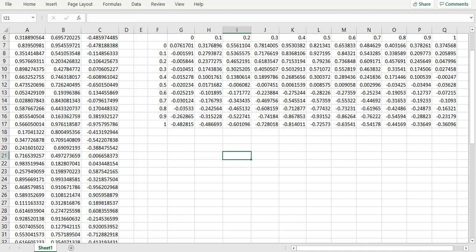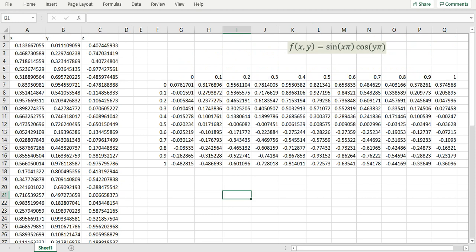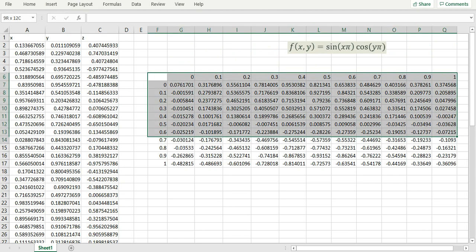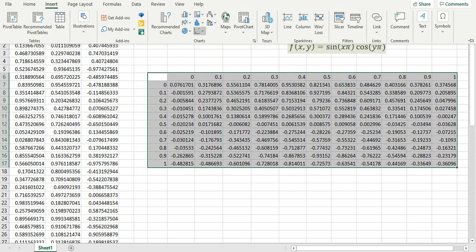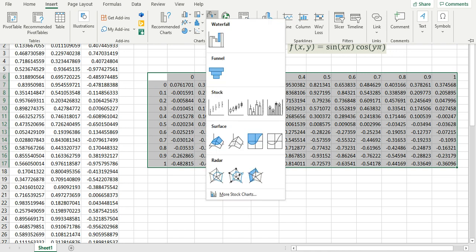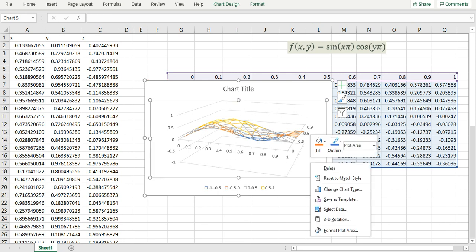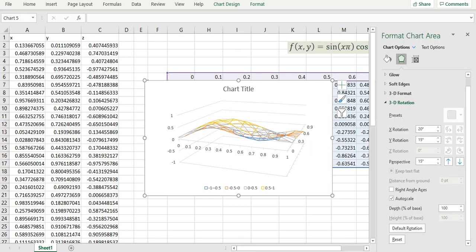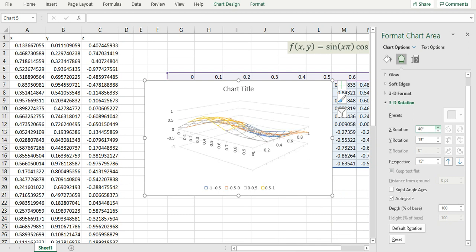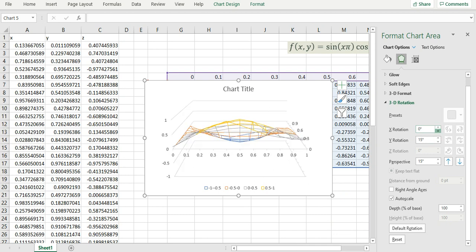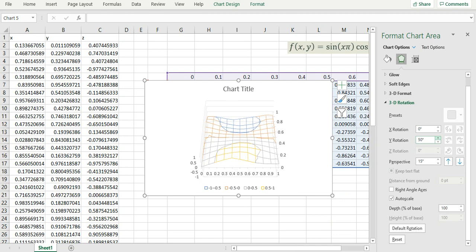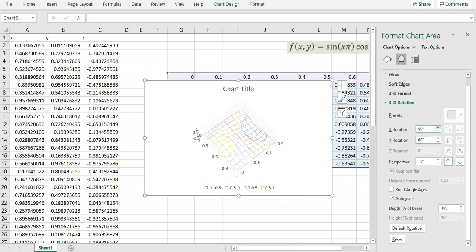Let's next plot the surface using Excel 3D plots. I highlighted the entire data, including the grid X and Y coordinates. And I'm going to insert a surface plot. We can use the 3D rotation control to rotate the surface a little bit so we can have a better view for how the surface looks like.